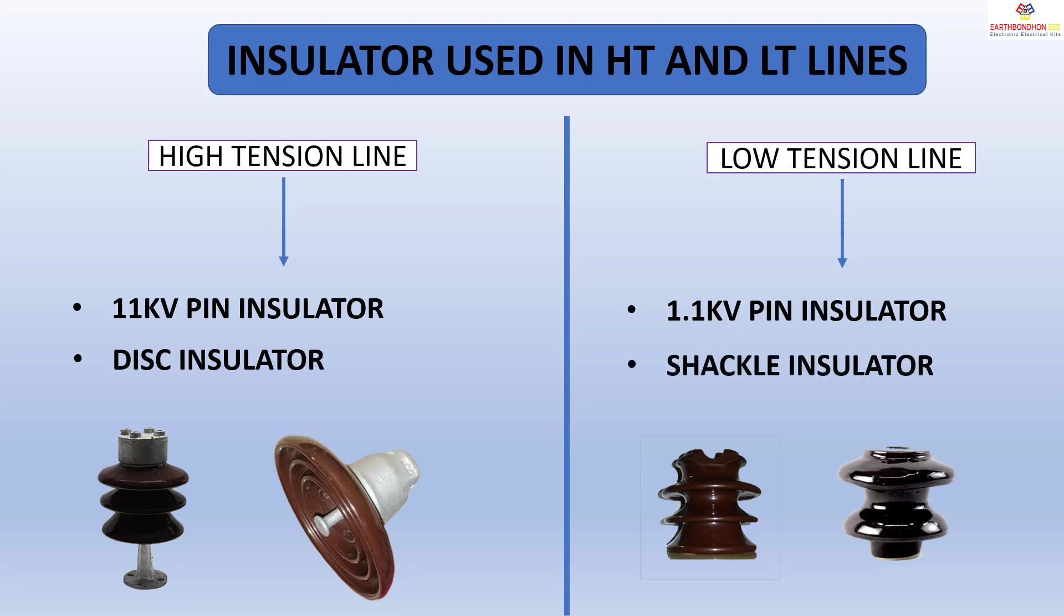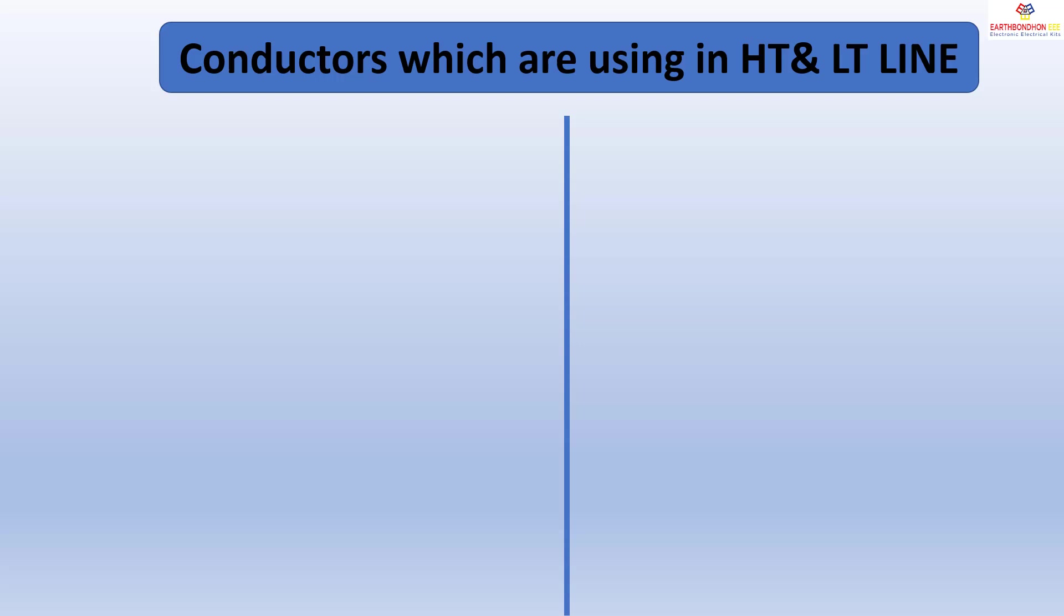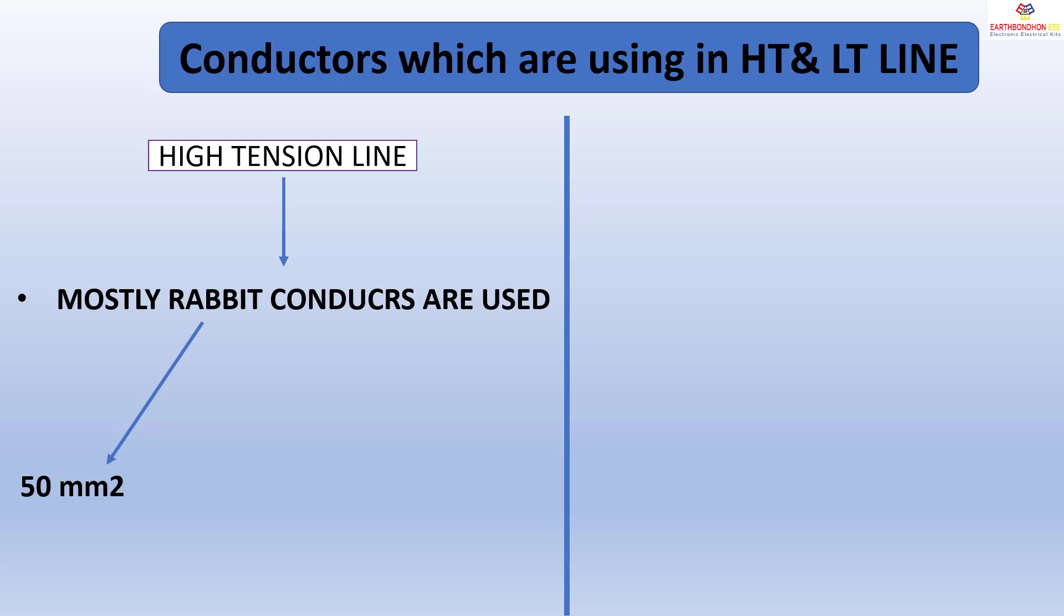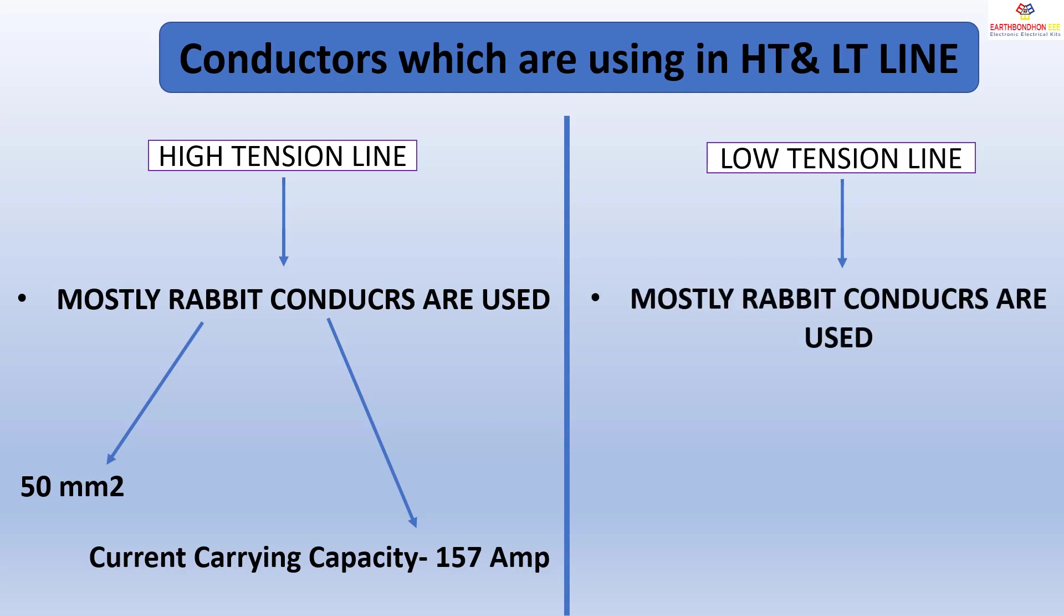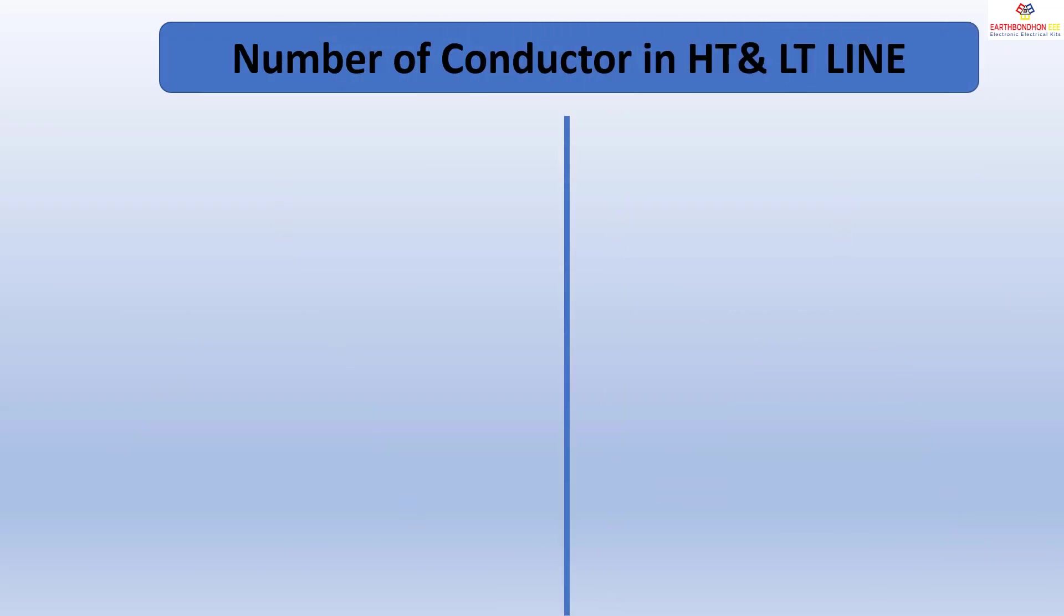Conductors used in HT and LT lines: High tension line mostly uses rabbit conductors, 50 mm² size, current capacity 157 amperes. Low tension line mostly uses rabbit conductors, 20 mm² size, current capacity 89 amperes.